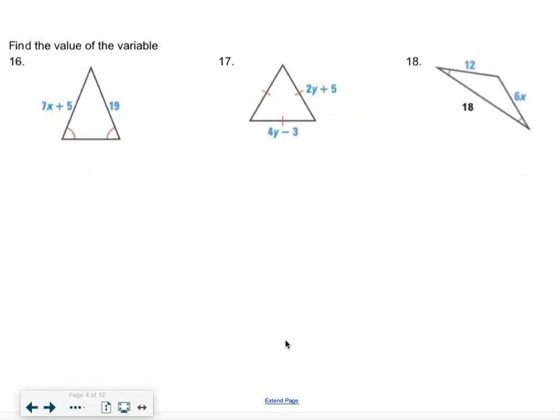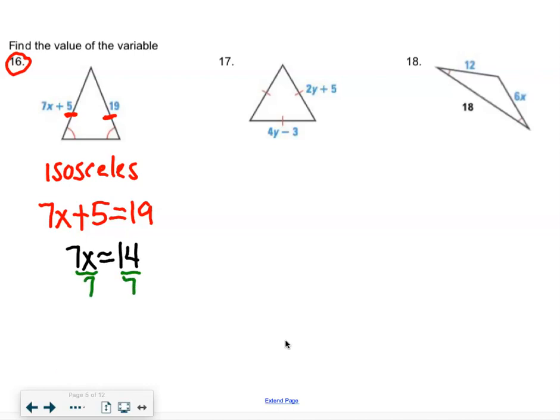On 16 through 18, let's see there. 16 through 18, we're just trying to find the variable. We'll just do 16 together because it's just right here. Well, what kind of a triangle is this? It's isosceles because I have two angles the same. And what do we know about the legs of our isosceles triangle? Well, they're equal. So I can just figure out what x is by setting them equal to each other. So if I subtract over my 5, I get 14. Divide by 7. x equals 2. Done. 17 and 18 should be okay for you.